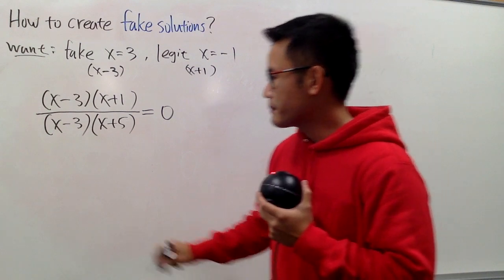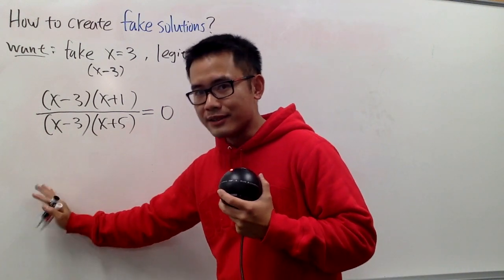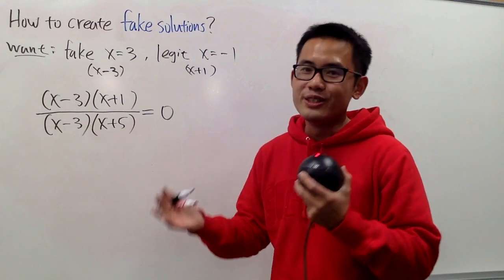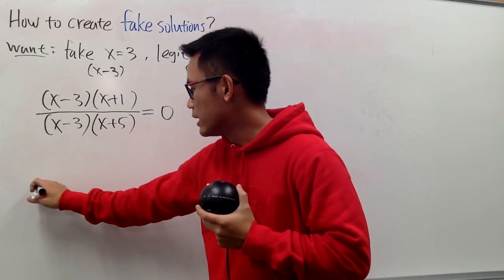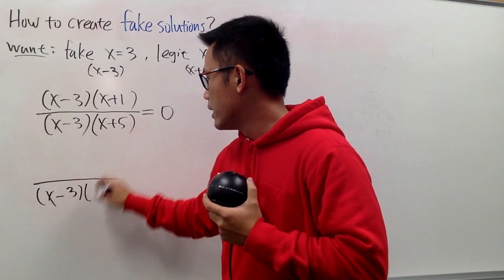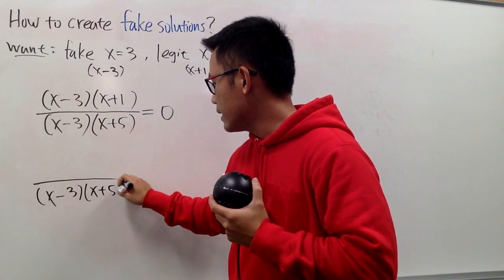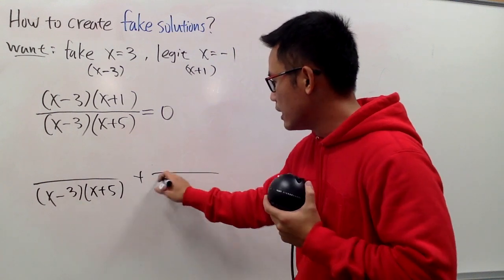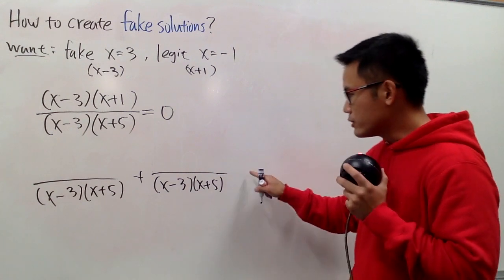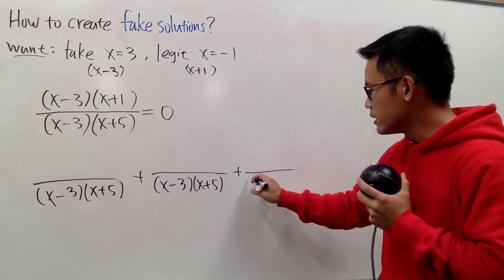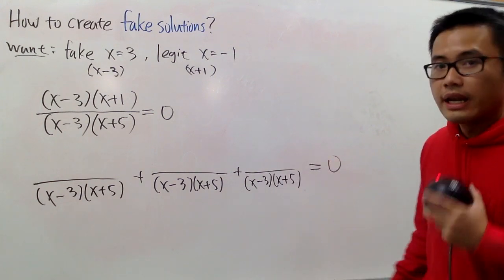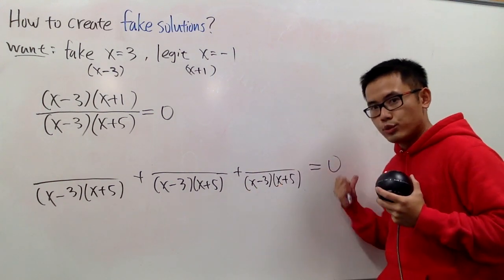I want to create something plus something equals something. That's a rational equation. So what I will do is, I want to keep the same denominator, (x minus 3)(x plus 5), and then plus something else, (x minus 3)(x plus 5), and then I will also write down plus something else, (x minus 3)(x plus 5), and all this equal to 0, and later on, I will move this to the right-hand side.